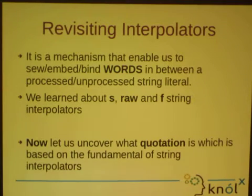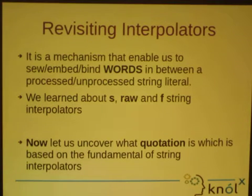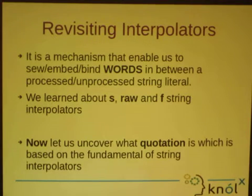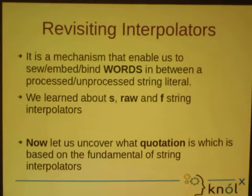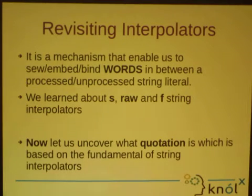First of all, this will be a revisiting of interpolators. As you all remember, it's a mechanism to put things in between a processed or unprocessed string literal. We learned that we had three basic interpolators: S, raw, and F. Now we will be moving towards what quotations are.